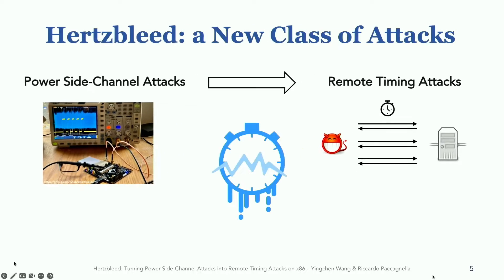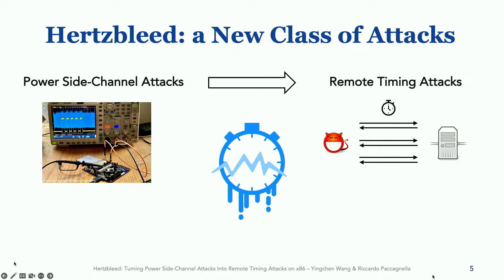Hertzbleed bridges the gap between these two disjoint classes of attacks by turning power side-channel attacks into remote timing attacks. Hertzbleed makes information that was originally only available to power side-channel attacks now available through remote timing. And as we will see, Hertzbleed is a real threat to security, and it can be used to mount timing attacks even on cryptographic implementations that were considered secure against timing attacks up until today.